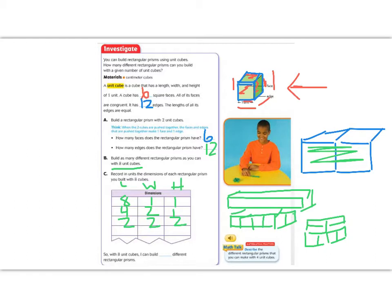So with 8 unit cubes, I could build 3 different rectangular prisms. Great job so far. Let's keep going.